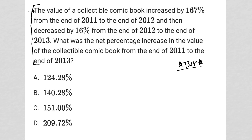The problem says the value of a collectible comic book increased by 167% from the end of 2011 to the end of 2012. I'm going to write that down: from 2011 to 2012 we had a plus 167%, positive meaning increase. It's worth my time to come up with real values — what does 167% mean unless I know the starting value?